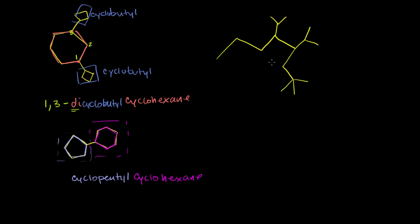Now let's try this one over here. The first thing we want to do — there's no cycles here — but we have to identify the longest chain. Let's count it out. It could be one through seven, but that's not the longest chain. Maybe it's one through eight — that looks like the longest chain. We want to start numbering in the direction so we encounter the first attached groups first. We start numbering down here because we have groups attached right on the two carbon. So we go one, two, three, four, five, six, seven, eight. So we know we're dealing with an octane — all single bonds, not a cyclooctane.